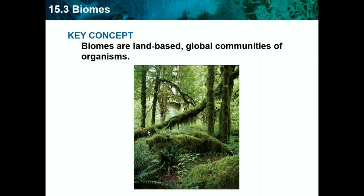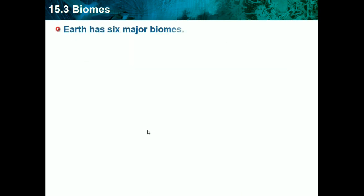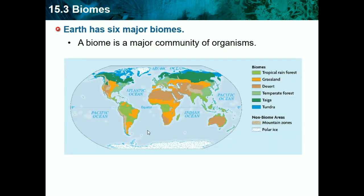Now we're talking about biomes — 15.3. The key concept is that biomes are land-based global communities of organisms. Earth has six major biomes: tropical rainforest, grasslands, deserts, temperate forests, taiga, and tundra.